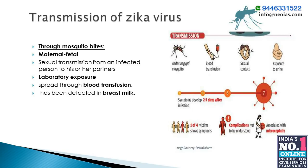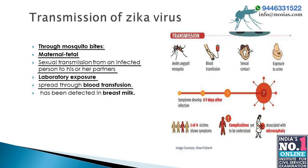Other routes of transmission include maternal-fetal transmission during periconceptional, intrauterine, and perinatal periods. Sexual transmission from an infected person to their partners is also a mode of transmission. Laboratory exposure and blood transfusion are additional routes. Zika virus has been detected in breast milk, but there are no reports of transmission through breast milk. Based on available evidence, the benefits of breastfeeding outweigh any possible risk.